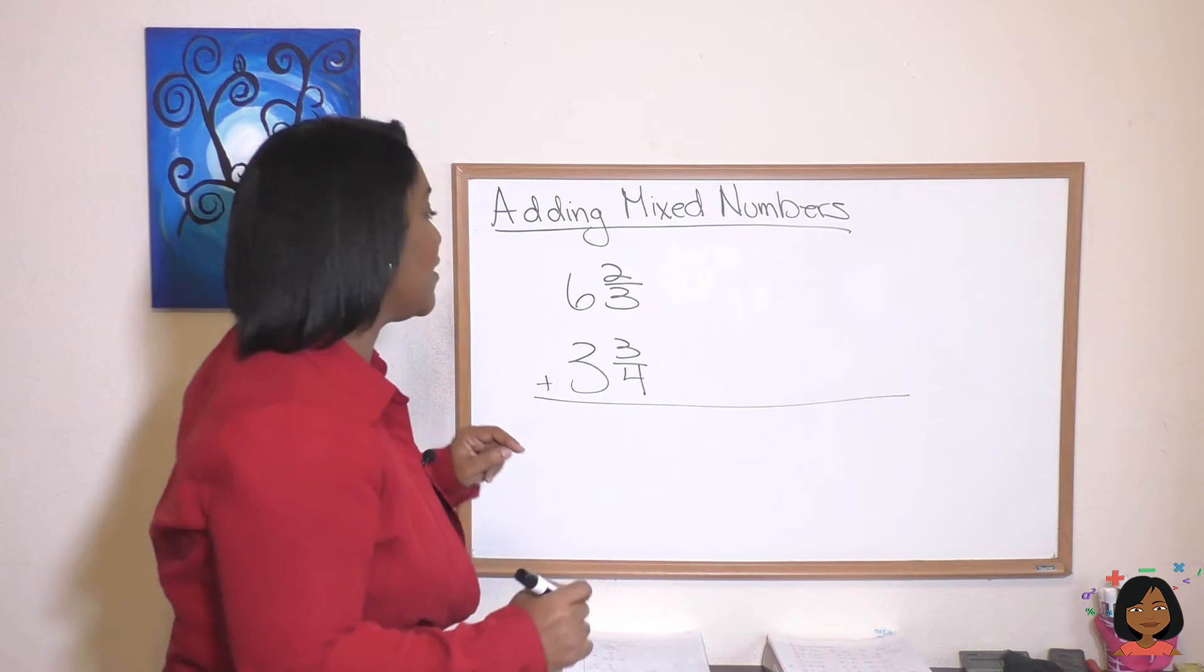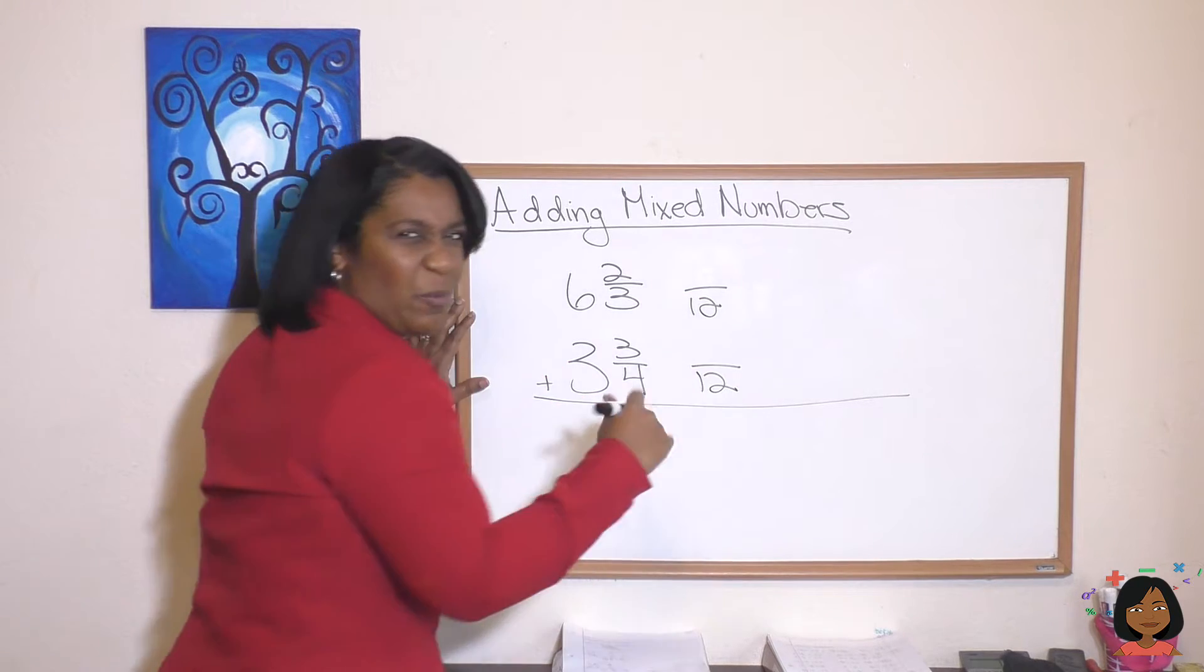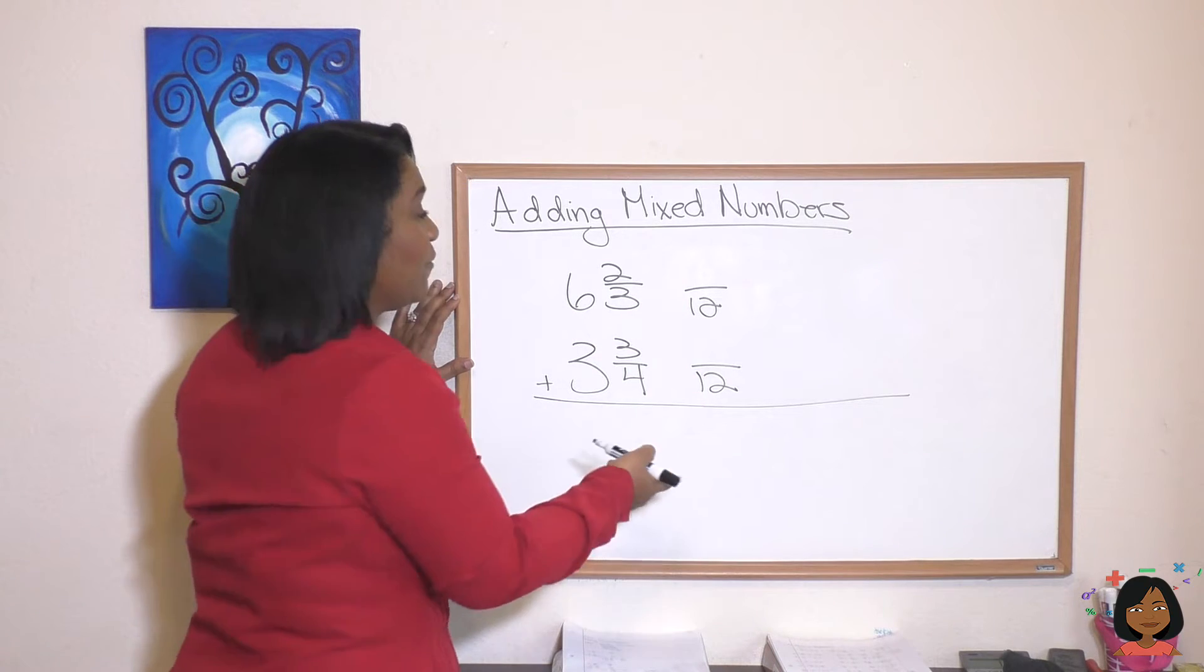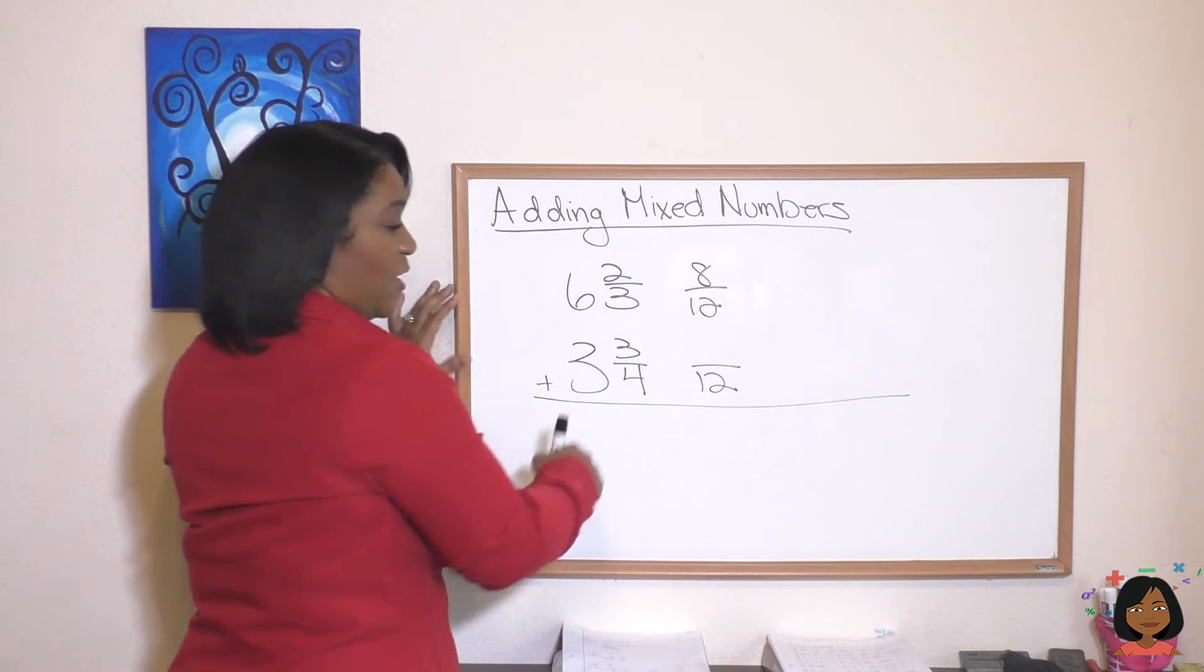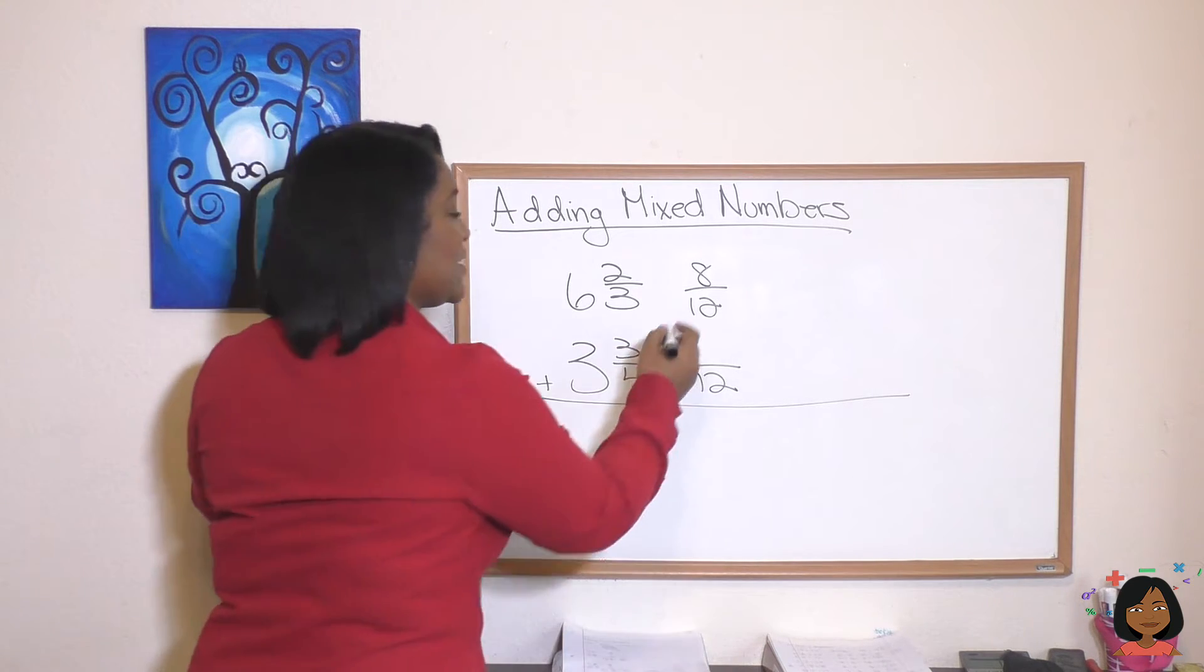So we're going to convert both of these numbers over to 12, at least just the fraction piece, because that's all we need. The whole numbers can stay by themselves. Three times four is 12 and two times four is eight. Four times three is 12. Three times three is nine.